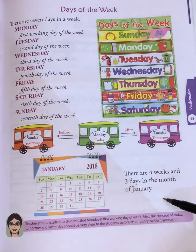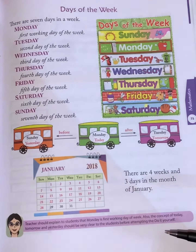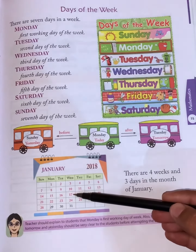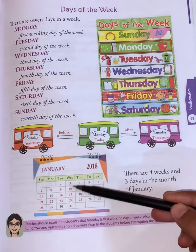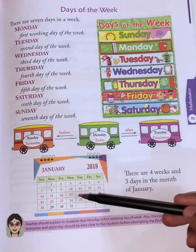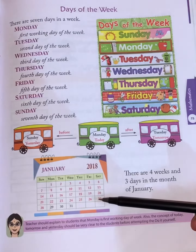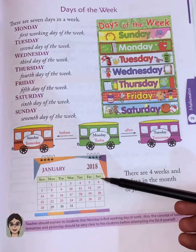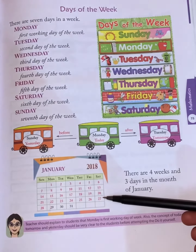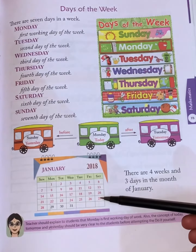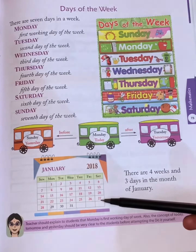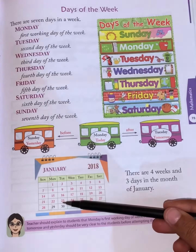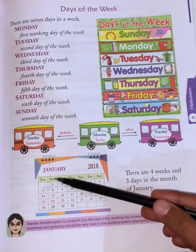When talking about days, we should know yesterday, today, and tomorrow. Suppose today is Friday — yesterday it was Thursday and tomorrow will be Saturday. Similarly, if today is Monday, then yesterday it was Sunday and tomorrow will be Tuesday.